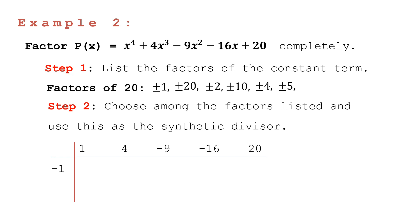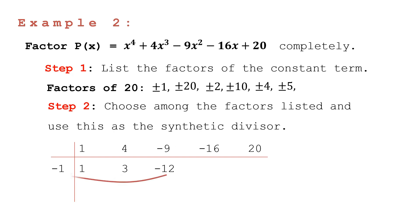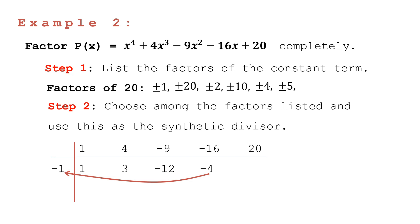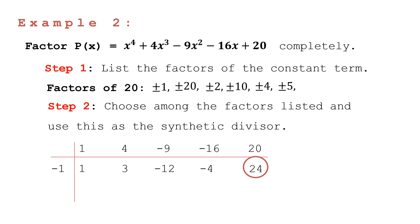Step two: write the coefficients — positive 1, positive 4, negative 9, negative 16, and positive 20. Try negative 1 as synthetic divisor. Bring down positive 1, then: 1 times negative 1 equals negative 1; negative 1 plus 4 equals positive 3; 3 times negative 1 equals negative 3; negative 3 plus negative 9 equals negative 12; negative 12 times negative 1 equals positive 12; positive 12 plus negative 16 equals negative 4; negative 4 times negative 1 equals positive 4; positive 4 plus 20 equals 24. Remainder is 24.